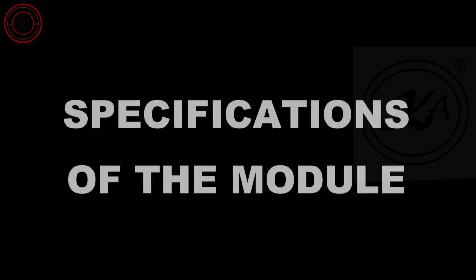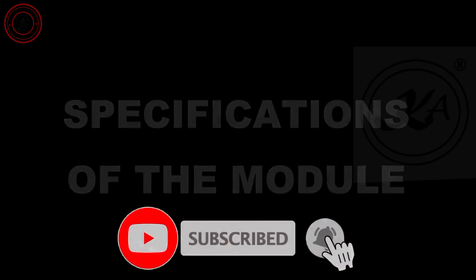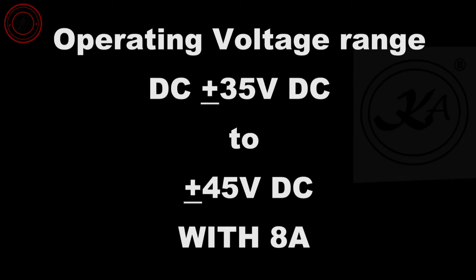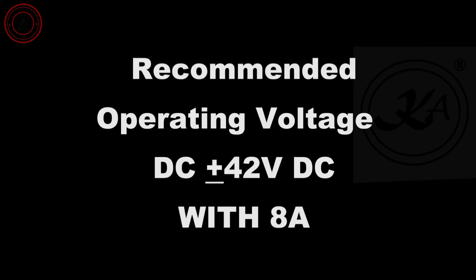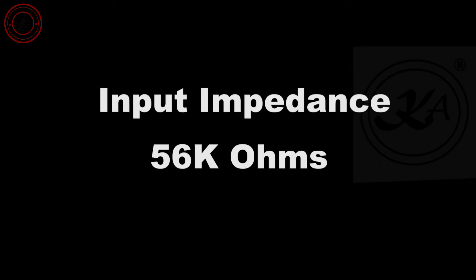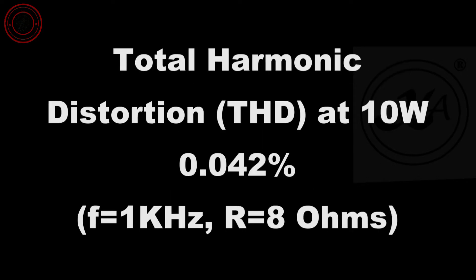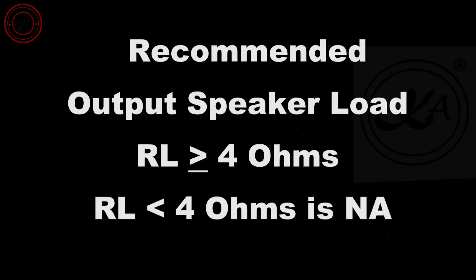Here are the specifications of the module KA2411. Operating voltage range is from DC plus minus 35 voltage to plus minus 45 voltage DC dual supply, with minimum 8 ampere. Recommended operating voltage is DC plus minus 42 volt with minimum 8 ampere. Input impedance of this amplifier module is 56 kilo ohms. Classification of this amplifier module is Class AB. Total harmonic distortion, THD, at 10 watts is 0.042%, at the frequency of 1 kilohertz and load impedance of 8 ohms.